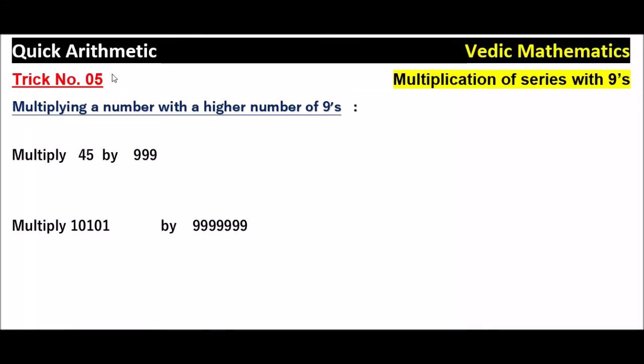Vedic mathematics — this is trick number 5. For all the previous 4 tricks, please click the playlist link given in the description part of this video. Now, multiplication of a series with nines.